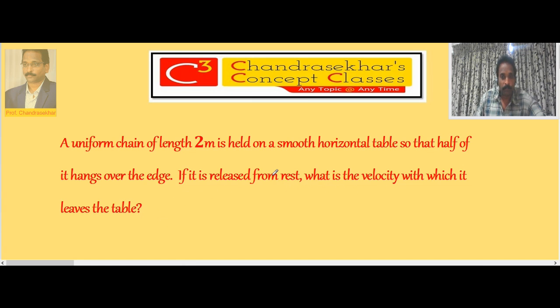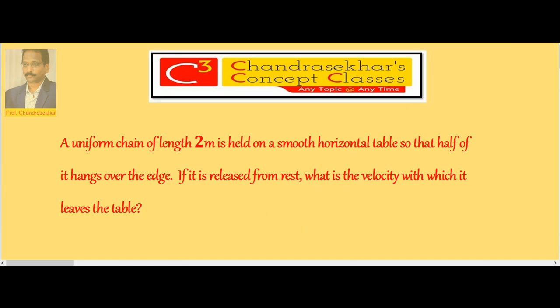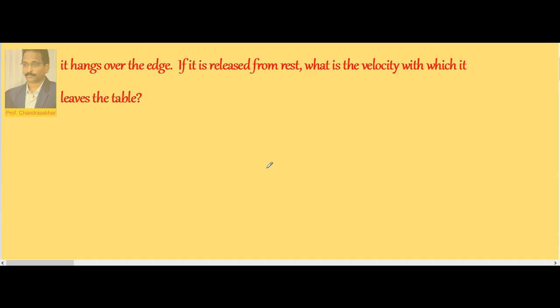Now let us consider the initial case. This is a table on which a uniform chain is placed like this. Half of it is hanging, so let us take this length as l by 2, mass is m by 2.